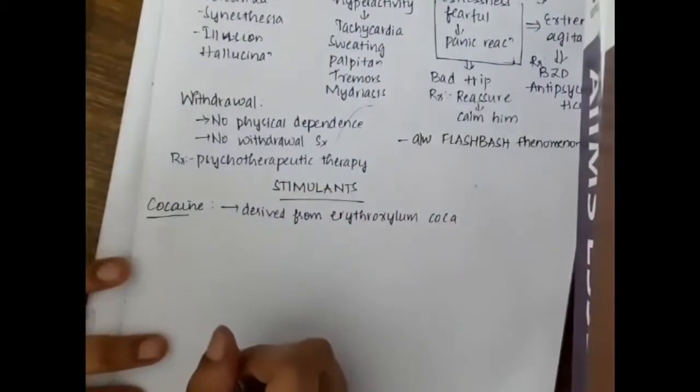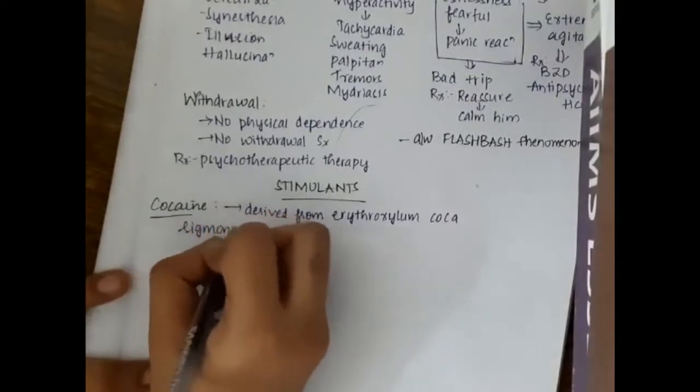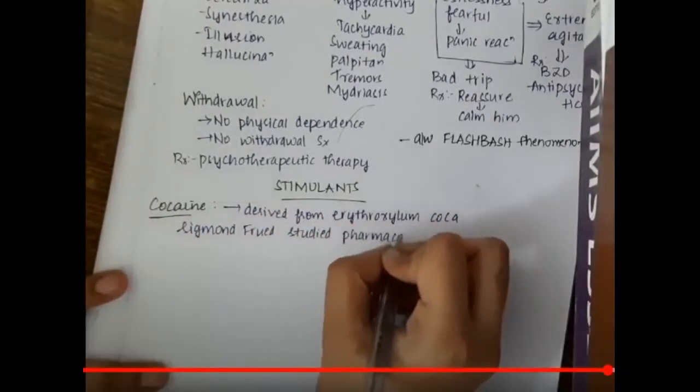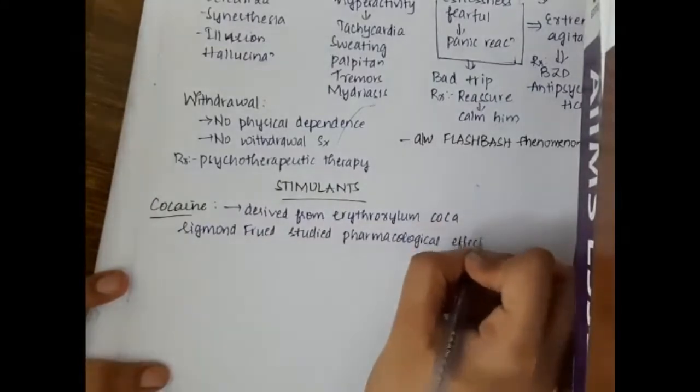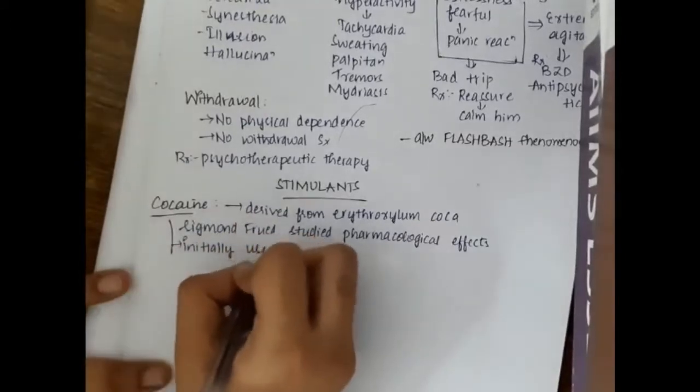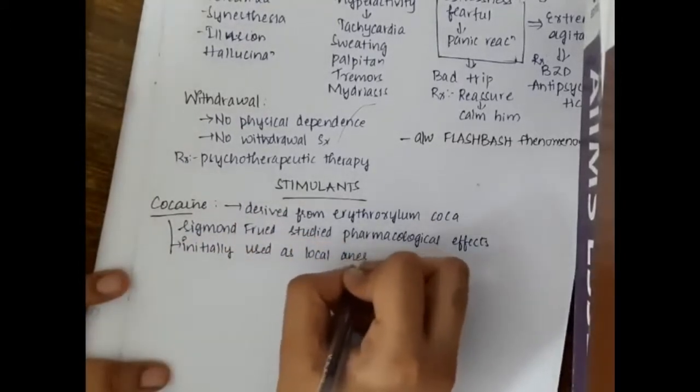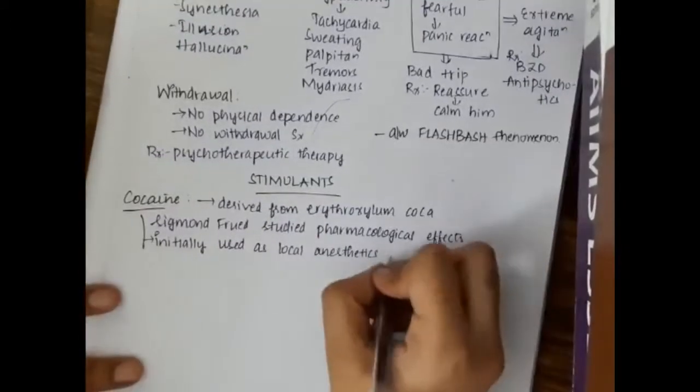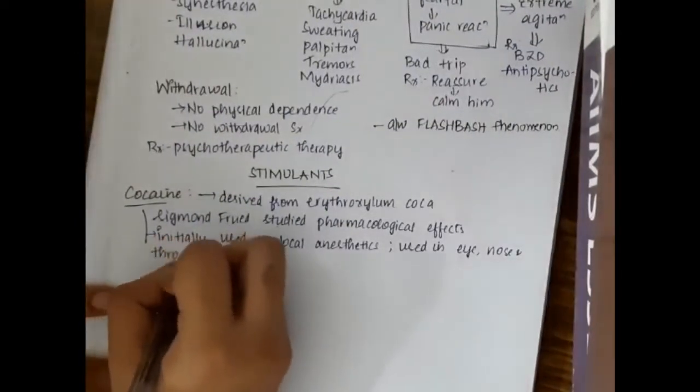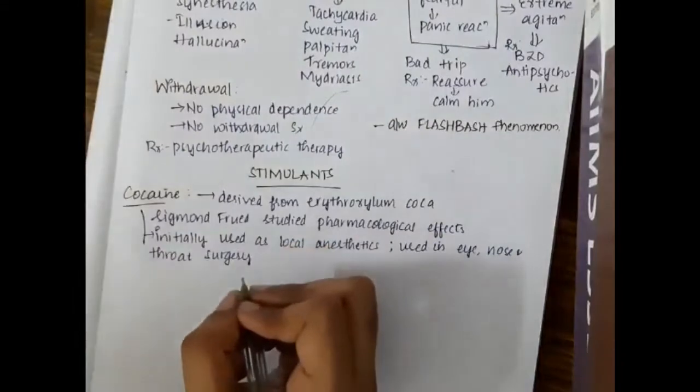Cocaine is derived from erythroxylem coca. This was studied by Sigmund Freud, who studied the pharmacological effects of cocaine. Initially, cocaine was used as a local anesthetic, especially in eye, nose and throat surgeries.